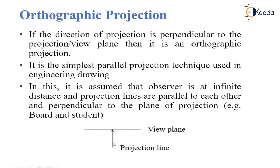The projection lines are perpendicular, at an angle of 90 degrees, to the view plane. It is the simplest parallel projection technique used in engineering drawing. In this, it is assumed that the observer is at infinite distance and the projection lines are parallel to each other and perpendicular to the plane of projection.